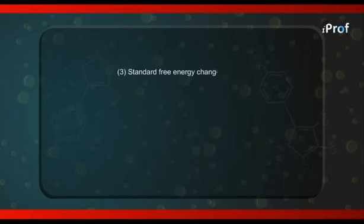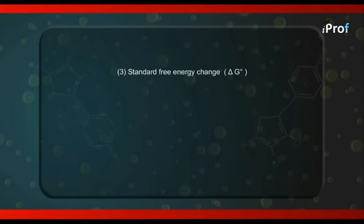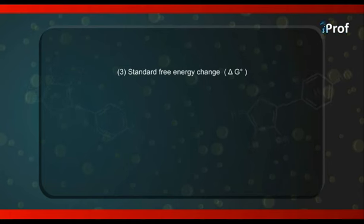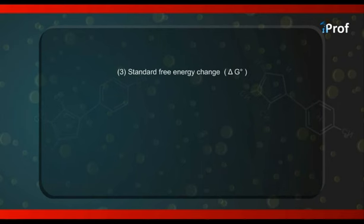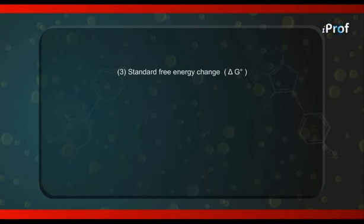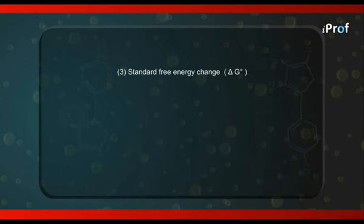The third factor affecting equilibrium constant is standard free energy change, represented by the symbol ΔG°. We have noted that at equilibrium ΔG equals zero for every reversible reaction. ΔG° is called the standard free energy change — it means the change in free energy of the reaction when things are taken in the standard state. These things will be dealt with in detail in the chapter on thermodynamics, but for now you should know what is meant by standard state.